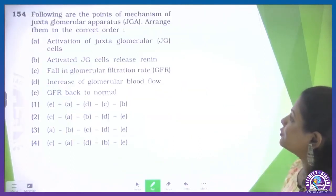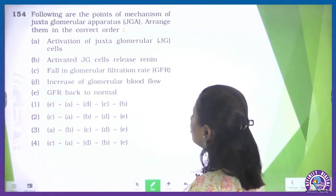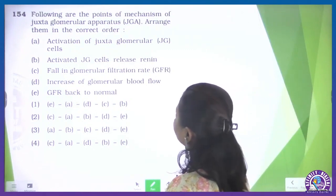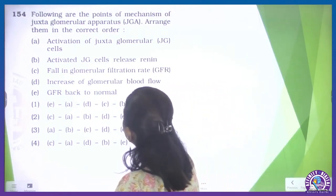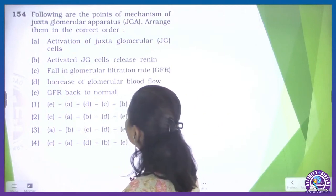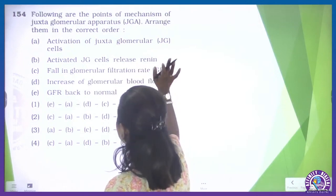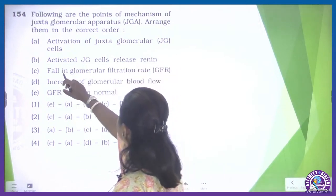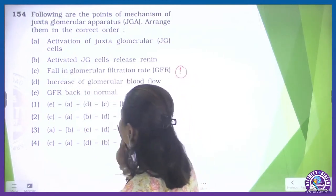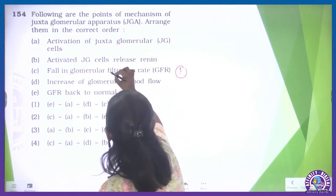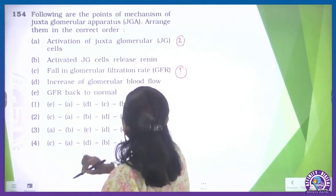Question number 154: the following are points of the mechanism of the juxtaglomerular apparatus — arrange them in correct order. Looking at the statements: activation of the juxtaglomerular cell happens after some problem is created first. Activated JG cell releases renin — this is not the first step. The fall in the glomerular filtration rate is the first statement. Then the juxtaglomerular cell gets activated — that should be the second statement.